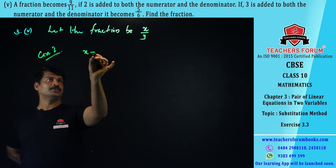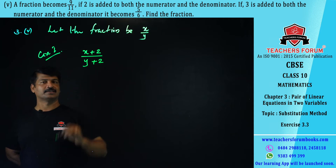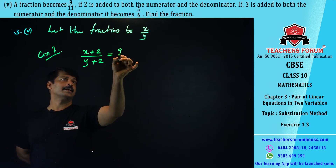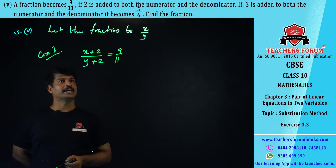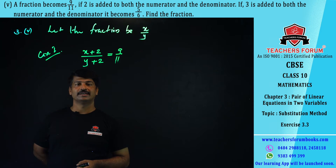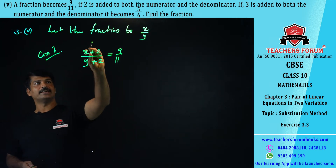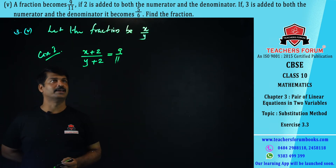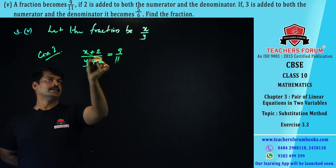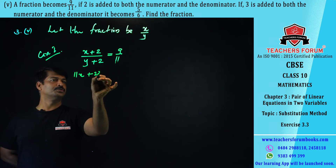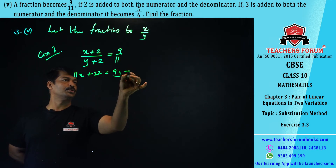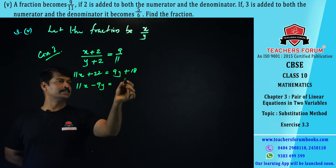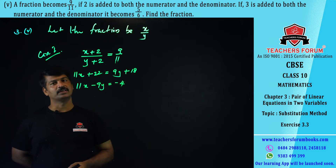Case 1: if you add 2 to both numerator and denominator the fraction becomes 9/11. So (x + 2)/(y + 2) = 9/11. Cross multiplying: 11(x + 2) = 9(y + 2), giving 11x + 22 = 9y + 18. Rearranging: 11x − 9y = −4. This is equation number one.